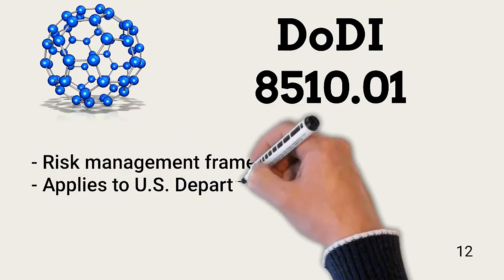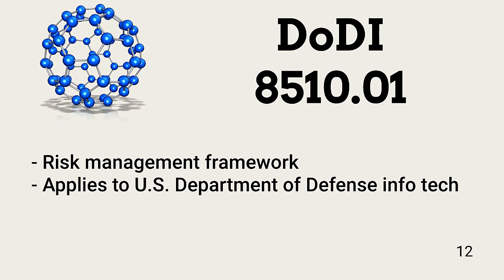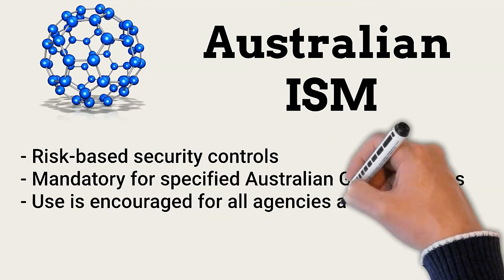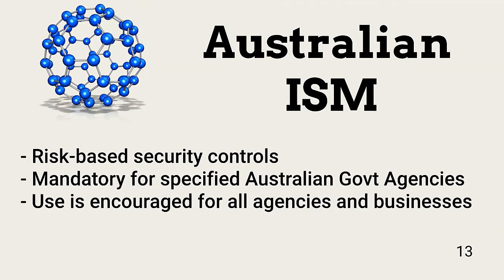The U.S. Department of Defense Instruction 8510.01 is a risk management framework that applies to all DoD information technology. The Australian Government Information Security Manual is intended for use by specified government agencies, providing standards and guidelines for the risk-based application of information security controls. The Australian Government also encourages all other agencies and commercial organizations to follow the ISM.